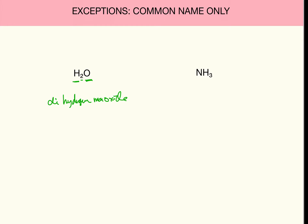Is that right? Name the second compound. Easy, you say — I see the two pieces. It's a type 3 because it's two non-metals, so it must be nitrogen hydride. Got the ending. It's one nitrogen and three hydrogens, so it must be nitrogen trihydride.